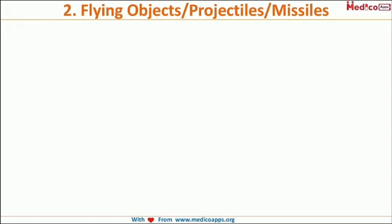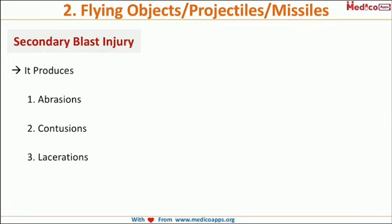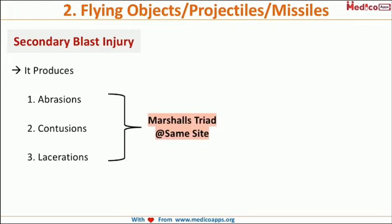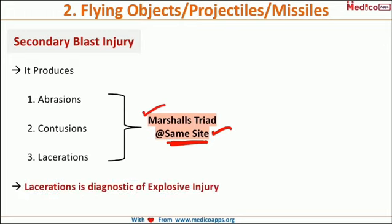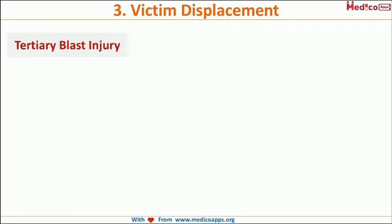Looking at secondary blast injury from flying objects, projectiles, and missiles: the characteristic feature is that secondary blast injury can produce abrasions, contusions, and lacerations. The most important point is that all three — abrasions, contusions, and lacerations — can be found at the same site. This is very characteristic of blast injury and is called Marshall's tract. Lacerations are also considered diagnostic of explosive injuries.